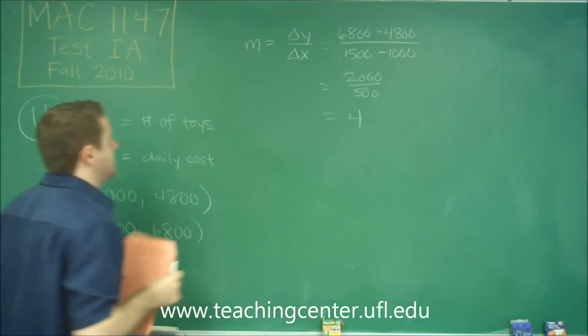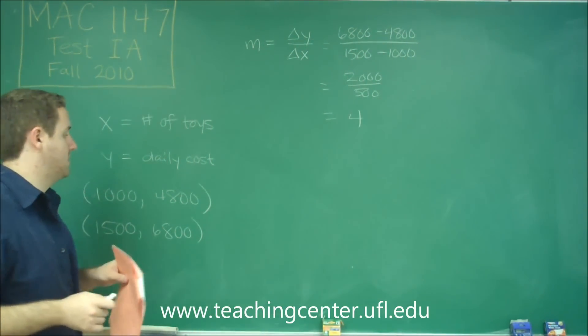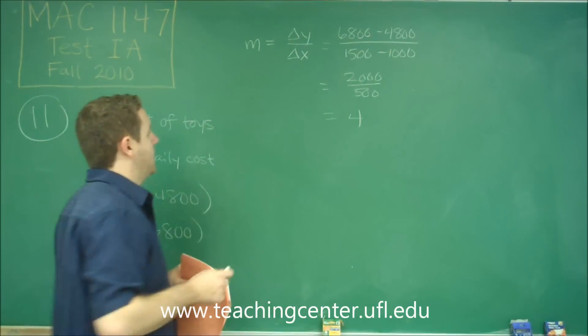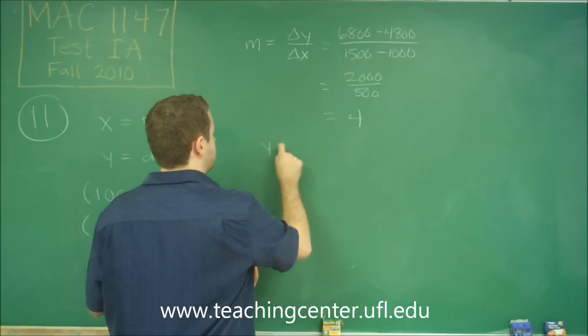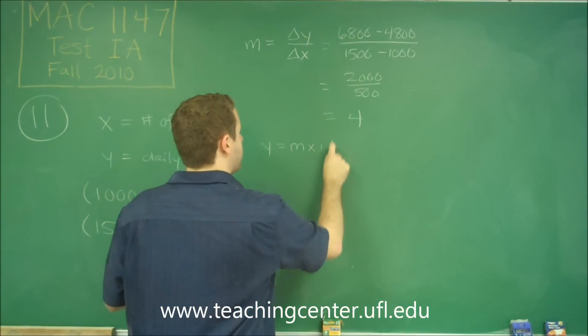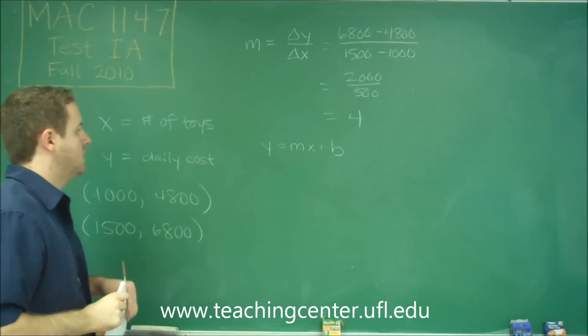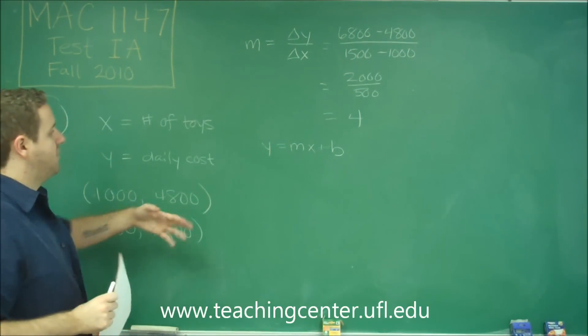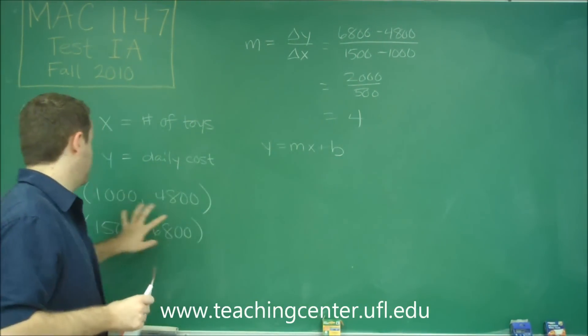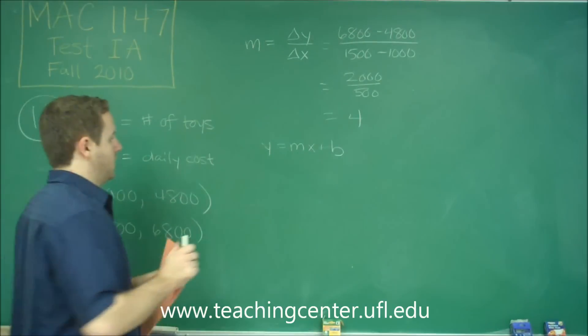So lastly, we need to just figure out what the total equation of the line is. To do that, we can just use Y equals MX plus B. Or if you're more comfortable using point-slope formula, you can do that as well. So we know we're trying to find B now, because we know the slope, and we know a point, so we can just plug in our values.